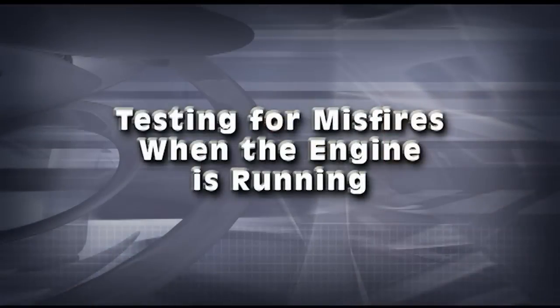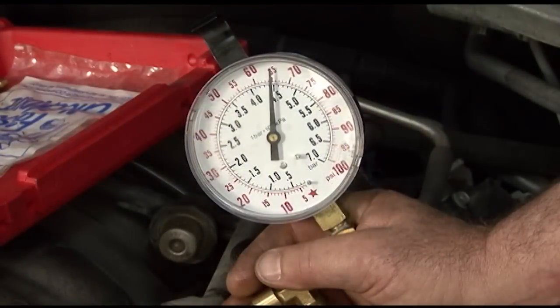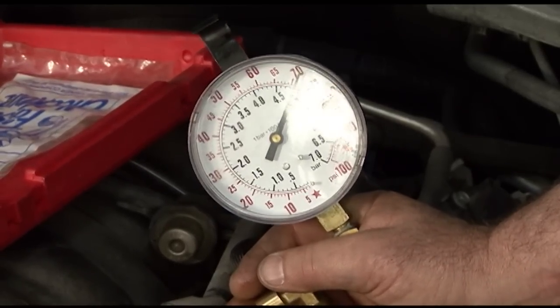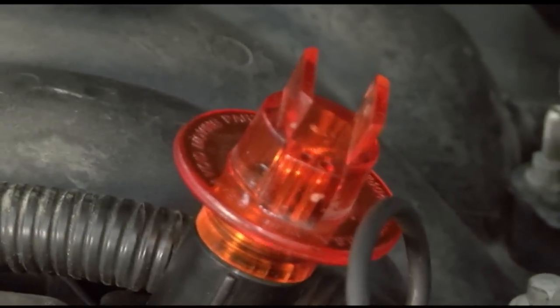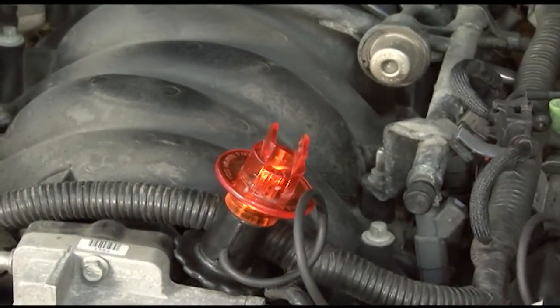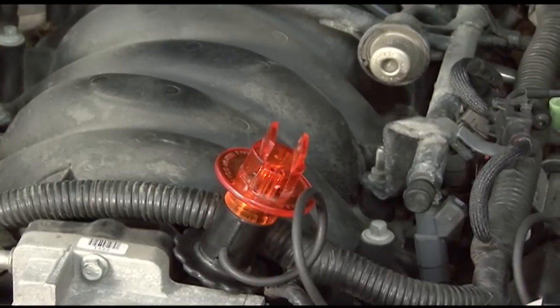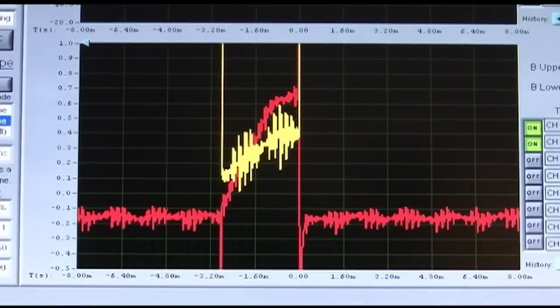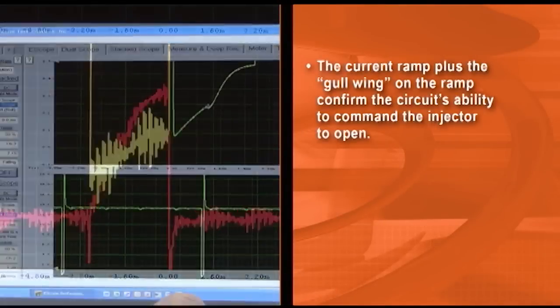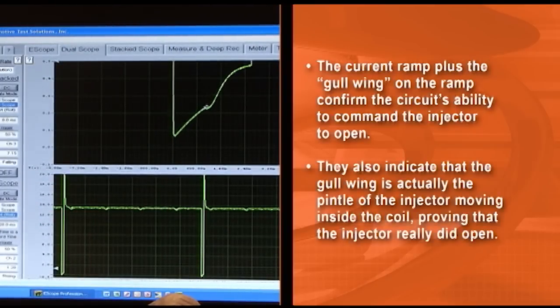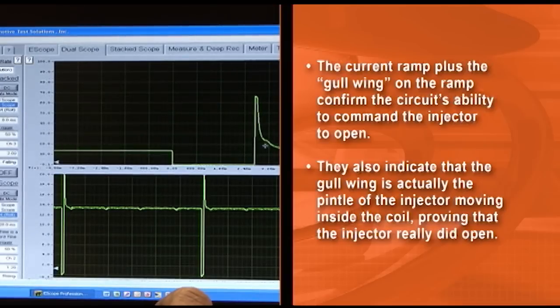Let's go back and talk about testing for misfires when the engine is running. Begin by checking both the static and running fuel pressure and compare them to published specifications. This is a noid light. When hooked up in place of the injector, it will tell you if the powertrain control module is sending a signal to fire the injector. Some techs learn the hard way that a noid light might show you that the computer can try and command an injector to open, but it doesn't show you if there's enough current flowing to actually command an injector to open and spray fuel. This often results in a misdiagnosis because the tech interprets the noid light flashing as a good injector signal. A low amp current probe and an oscilloscope can confirm the circuit works correctly under its own electrical load. The current ramp plus the gullwing on the ramp not only confirm the circuit's ability to command the injector to open — they also indicate that the gullwing is actually the pintle of the injector moving inside the coil, proving that the injector really did open.